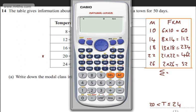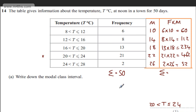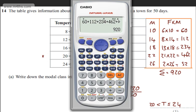So let's go ahead and just add these up. I'm being slightly lazy with a calculator. We're going to have 60 plus 112 plus 234 plus 462 plus 52. That gives me 920, so we can write now 920.